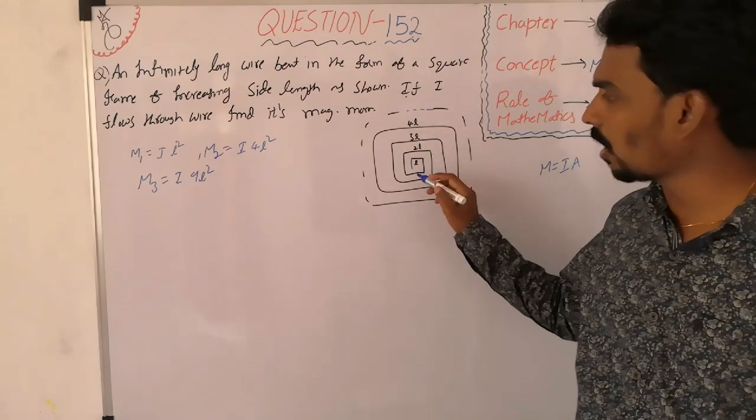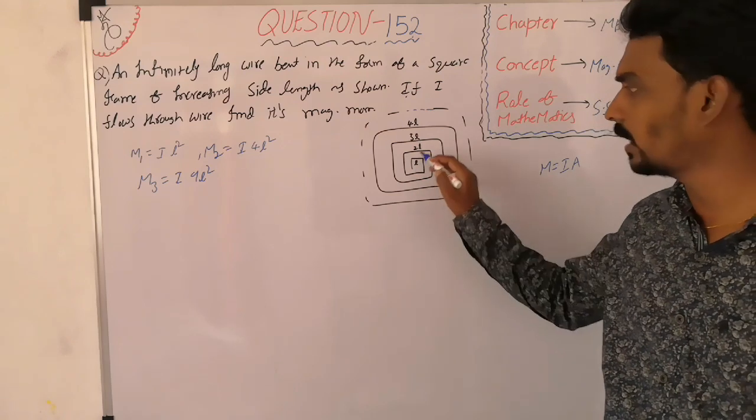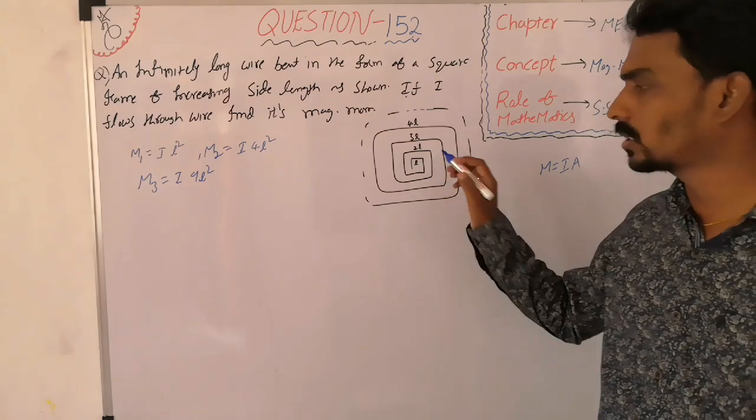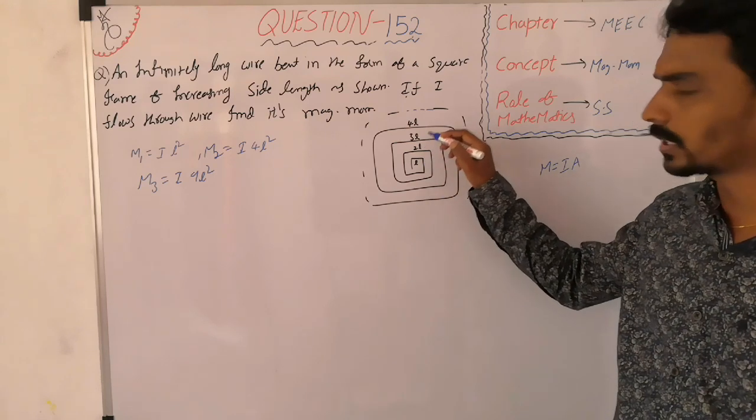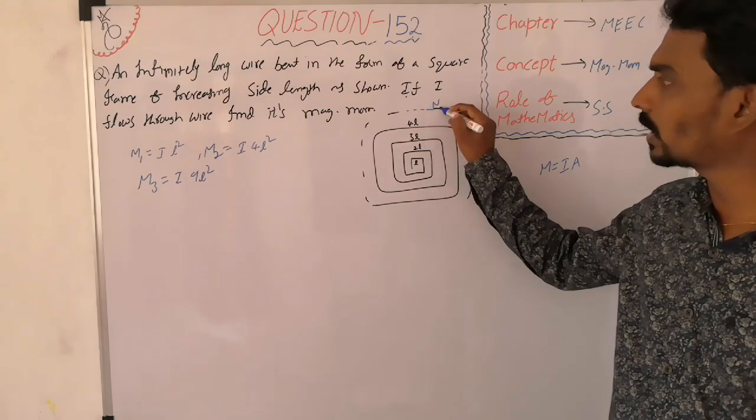That is an infinitely long wire bent in the shape of concentric square frames with side lengths L, 2L, 3L, and so on. The last one is NL.